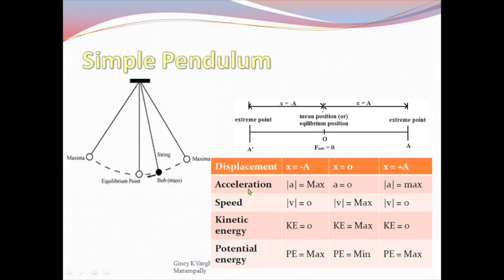Now, acceleration at the extreme points is maximum and at equilibrium it is 0. Speed is 0 at the extreme point and maximum at the equilibrium point. Kinetic energy is again 0 at the extreme point and maximum at the equilibrium point. Whereas potential energy is maximum at the extreme point and minimum at the equilibrium point.